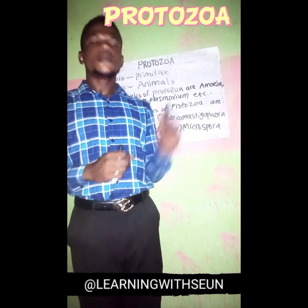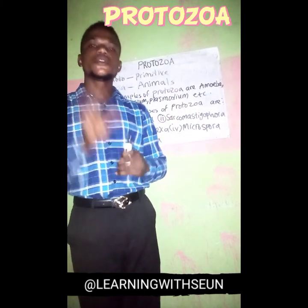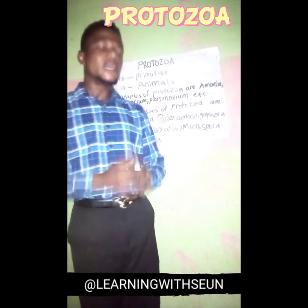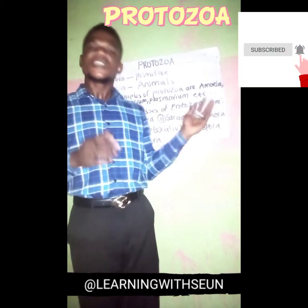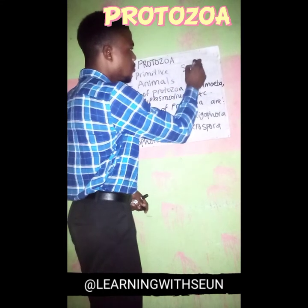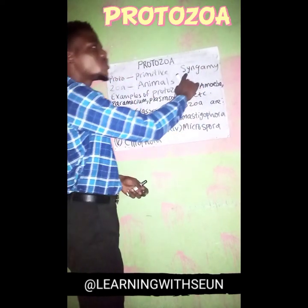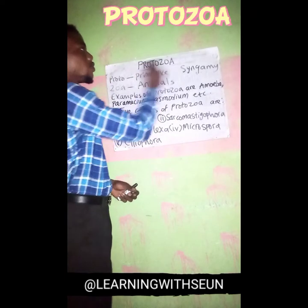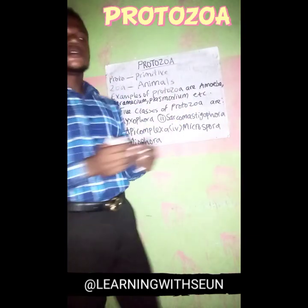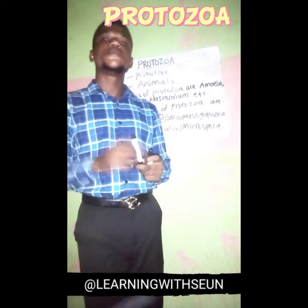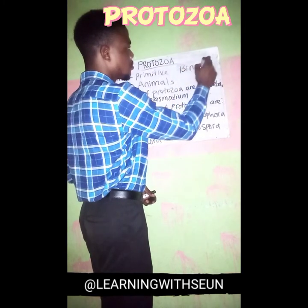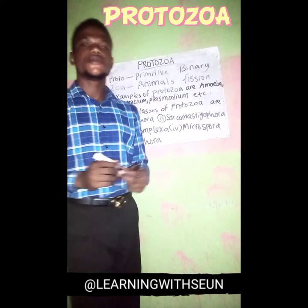Apart from this, protozoa reproduce by two ways — they reproduce sexually and asexually. Protozoa reproduce sexually by a process called syngamy. This is the sexual reproduction that takes place in protozoa. Protozoa also reproduce asexually, majorly by the process known as binary fission.